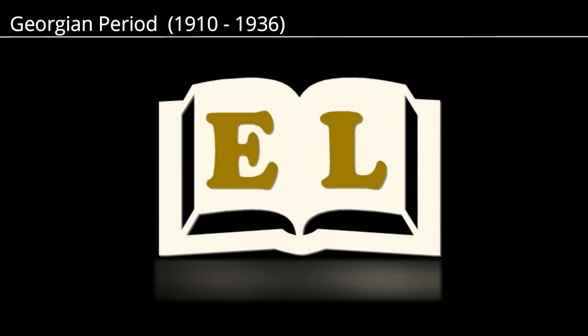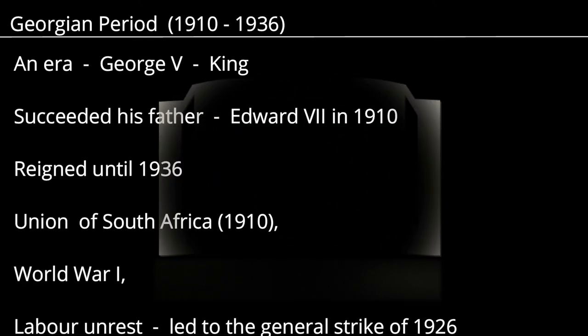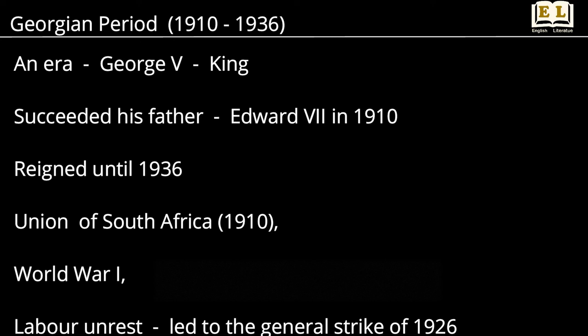Hello all. Today we will discuss the Georgian period. It is an era in English literary history spanning the years 1910 to 1936, during which George V was king.